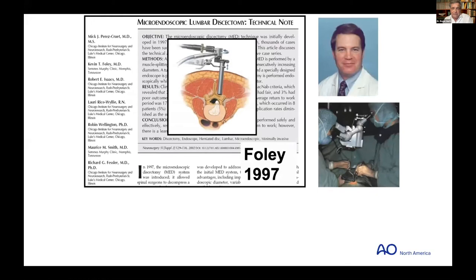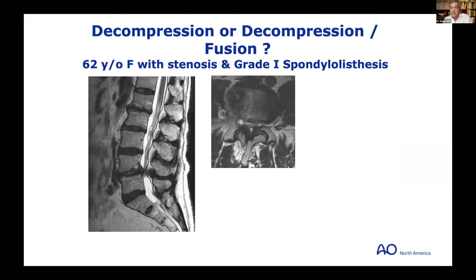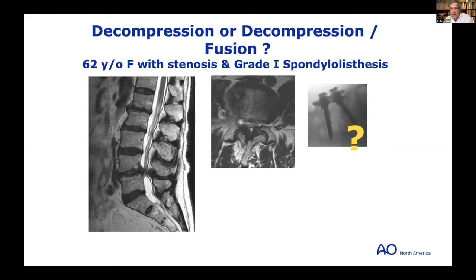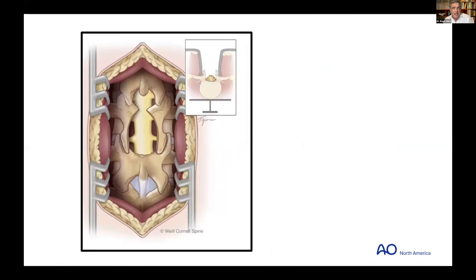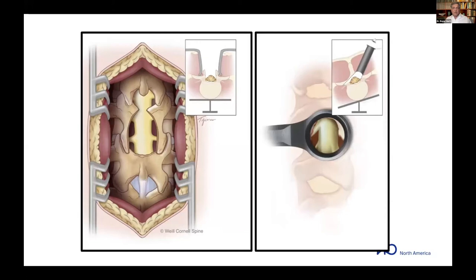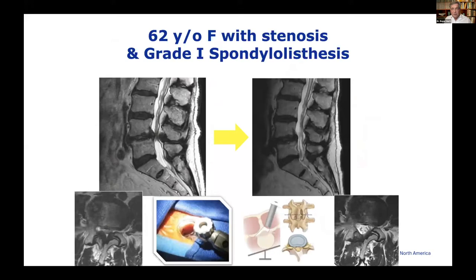Tubular surgery, introduced by Kevin Foley, Rick Fessler, Larry Kuhn, and others over 20 years ago, is the mainstay for MIS decompression and fusion surgery. A case example: a patient with spondylolisthesis, severe lumbar spinal stenosis, no movement on flexion-extension films, and no mechanical back pain. Using a tubular over-the-top approach without removing excessive bone, we successfully treated this patient with decompression alone — no fusion needed — and they did very well.